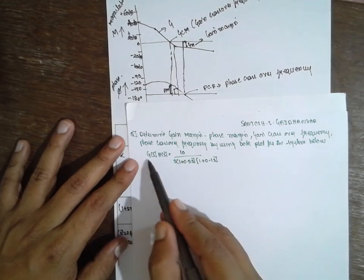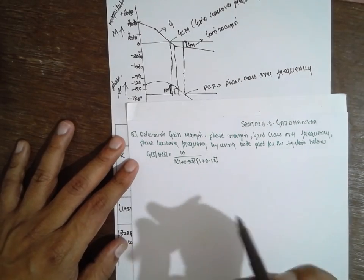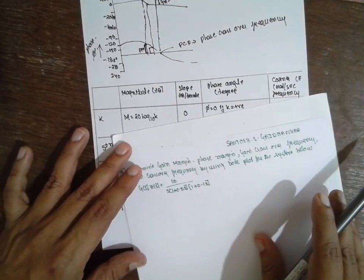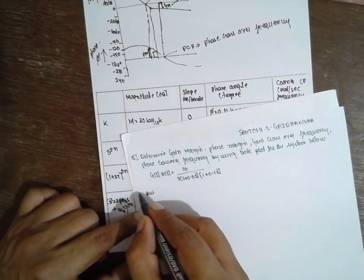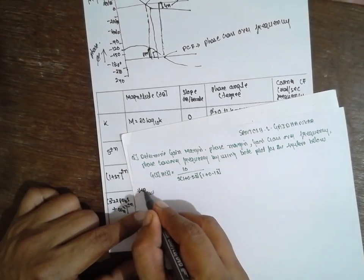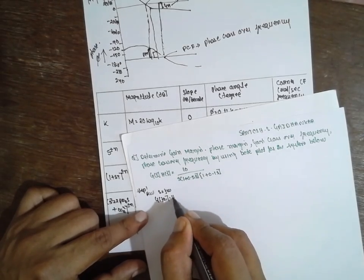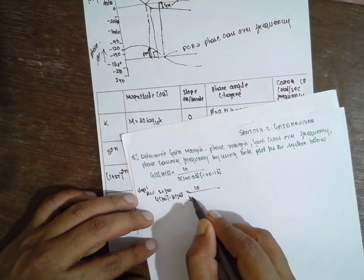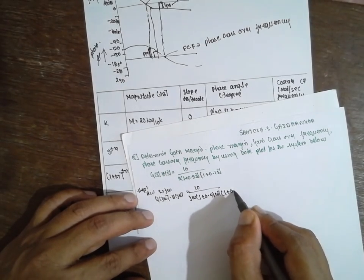The problem given is G(s)H(s) = 10 divided by s(1 + 0.5s)(1 + 0.1s). It is already in fractional form. Step 1: put s equal to jω, so G(jω)H(jω) = 10 divided by jω(1 + 0.5jω)(1 + 0.1jω).